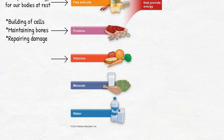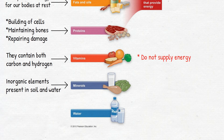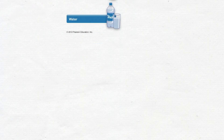Vitamins are organic molecules, meaning they contain both carbon and hydrogen. While they play an important role in regulating body processes, they do not supply energy to our bodies. Minerals are inorganic elements present in soil and water, which are absorbed by plants or consumed by animals. There are a range of minerals, including trace minerals needed by the body in very small amounts.